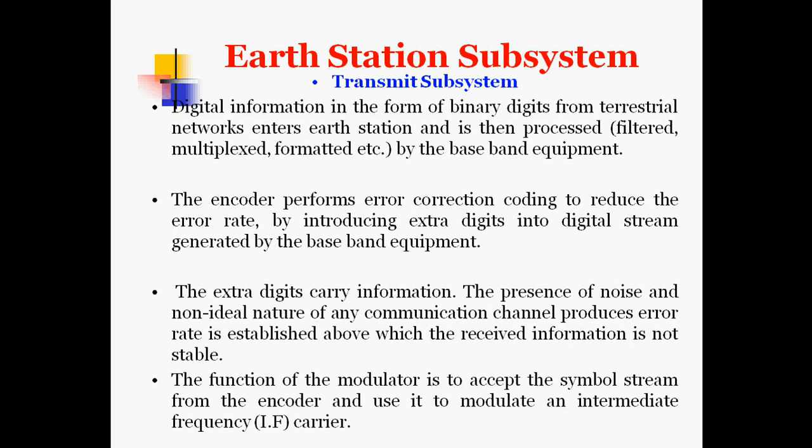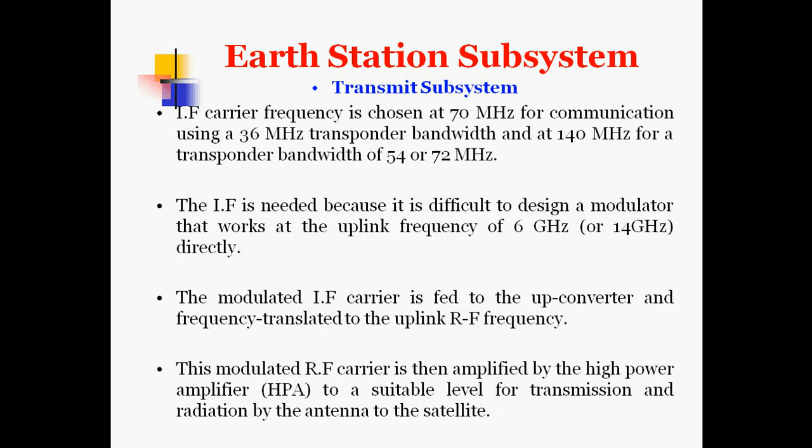The modulator accepts the symbol stream from the encoder and uses it to modulate an intermediate frequency carrier. This intermediate frequency carrier is chosen at 70 MHz for a 36 MHz transponder bandwidth, and at 140 MHz for a transponder bandwidth of 54 or 72 MHz. Intermediate frequency is used because it is very difficult to design a modulator that works directly at the uplink frequency of 6 GHz or 10 GHz. The modulated IF carrier is then fed to the up-converter and frequency-translated to the uplink radio frequency, then amplified by the high power amplifier for transmission by the antenna to the satellite.